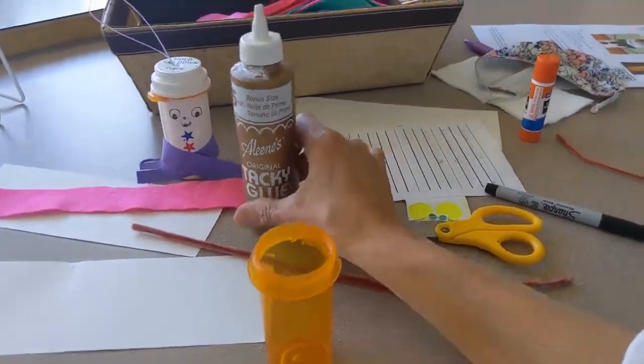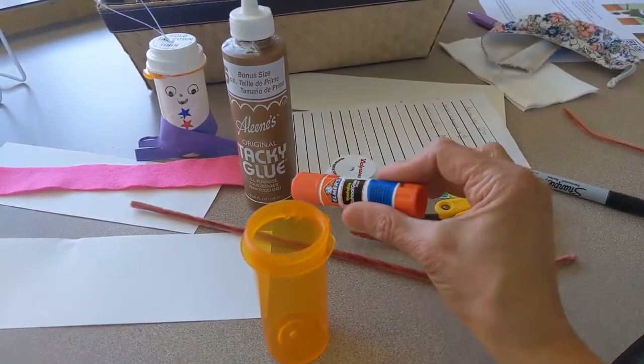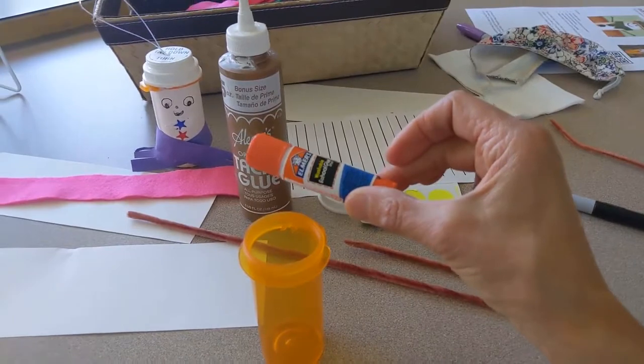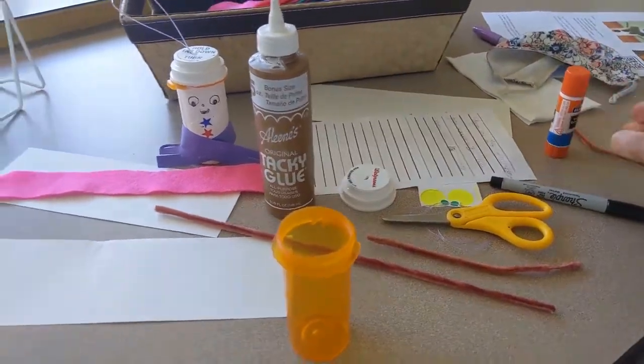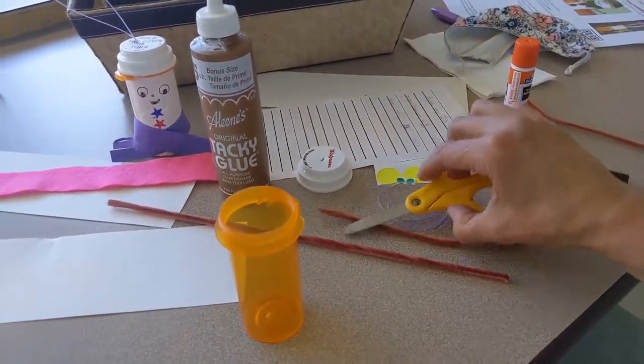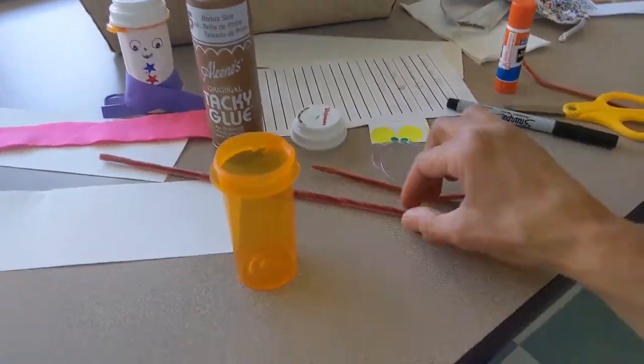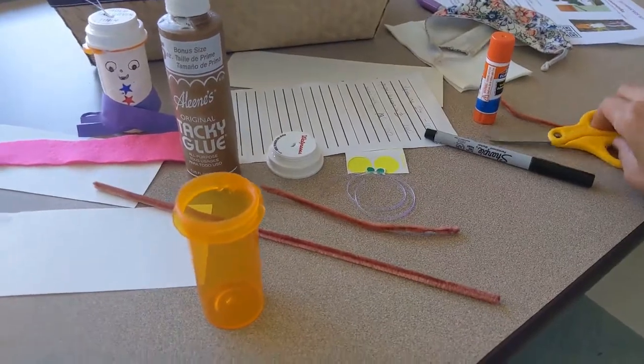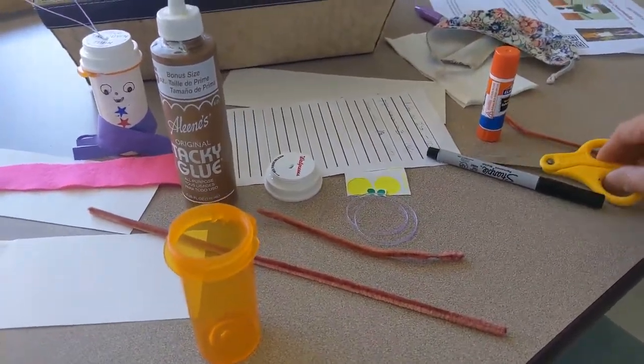Tacky glue is probably better than a glue stick, although my little nieces have been able to use glue sticks for a lot of things that I didn't expect would work. You'll get one pipe cleaner and a half pipe cleaner. I'm going to make a reindeer right now.